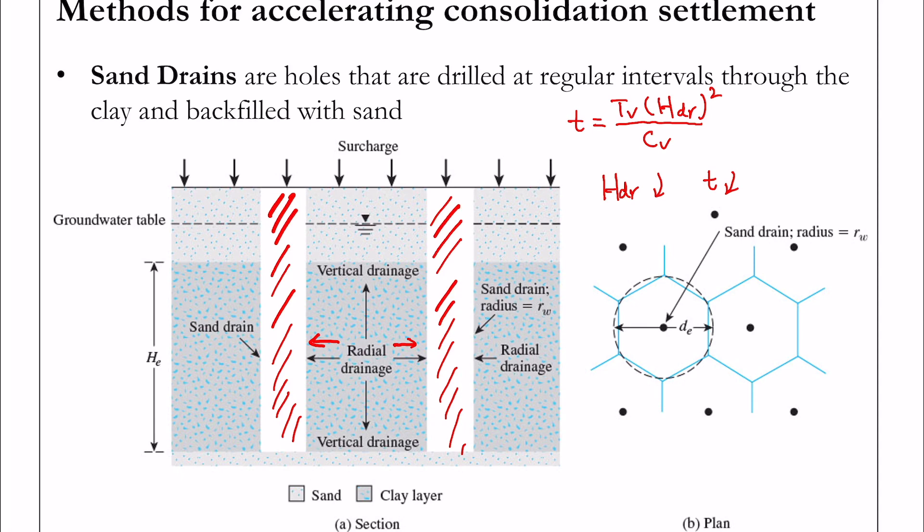Also, for the radial drainage case, this C sub V of horizontal radial drainage is actually approximately four to five times larger than C sub V in the vertical direction.